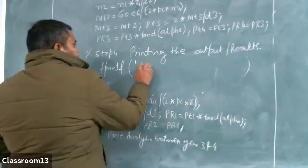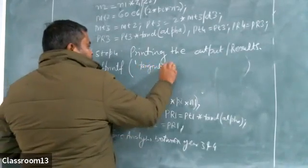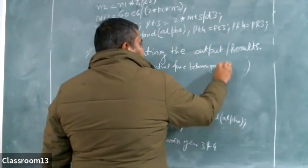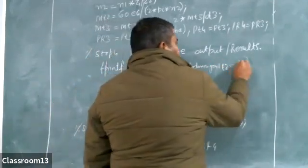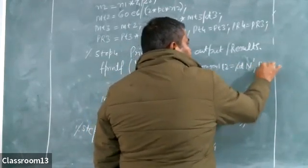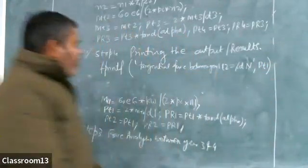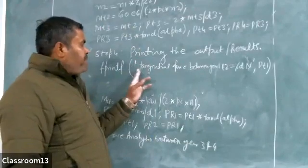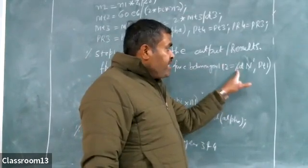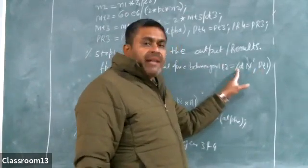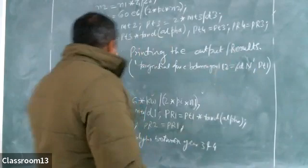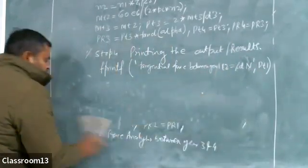I am writing: tangential force between gear 1 and 2 equal to percentage d, unit is Newton, comma, Pt1. So the value of Pt1 will be printed at the %d location. This is the output for the tangential force. Similarly you can print the radial force — everything is the same, percentage d is the same; only the variable is different.